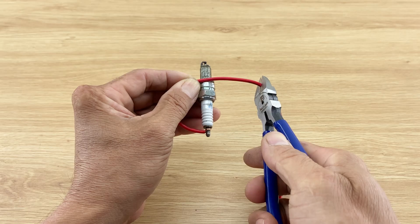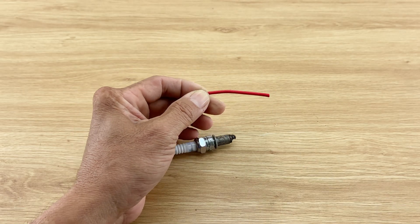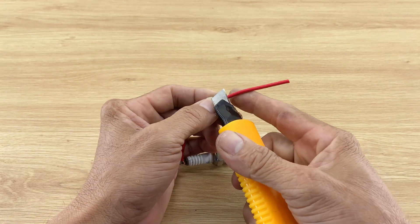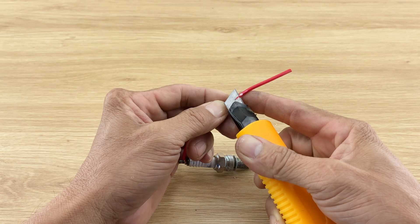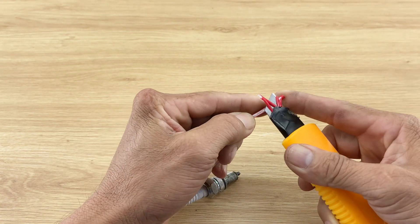Then I use pliers to cut the red wire short enough to prepare for the next connection. I use a box cutter to strip the insulation on the other end of the red wire.